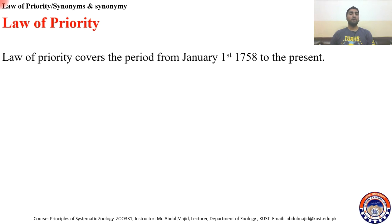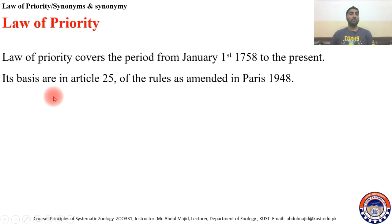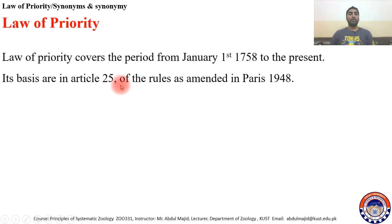This means that in the code, the Law of Priority started or was placed at January 1st, 1758 and onward to the present. Its basis is in Article 25 of the Zoological Nomenclature Code. If you visit the nomenclature code book, you will find this law under Article 25 of the rules, which were amended in Paris in 1948.